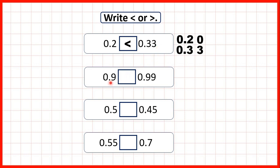Now we have 0.9 and 0.99. Again we write out both numbers with the decimal points lined up, write 0 in empty squares, and compare the larger place values first. Both numbers have 0 ones and 9 tenths, but 0.9 has 0 hundredths and 0.99 has 9 hundredths. So 0.99 is the larger decimal.